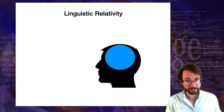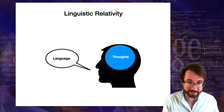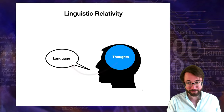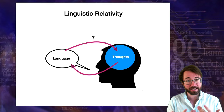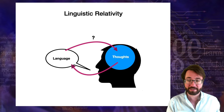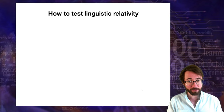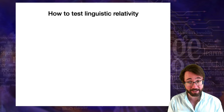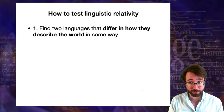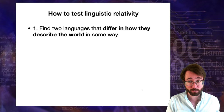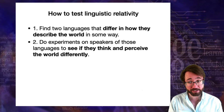Linguistic relativity is not about the idea that your thoughts affect your language — no one is doubting that the thoughts you think affect the things you say. Linguistic relativity is about whether there's a feedback where the language you speak actually constrains and structures and influences the thoughts in your head. Our basic procedure to test the hypothesis across languages is that we find two or more languages that differ in how they describe the world, and then we do experiments on speakers of those languages to see if they think and perceive the world differently.